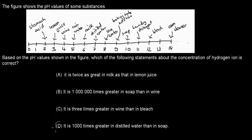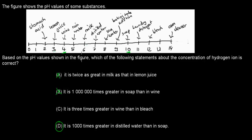Welcome back. The correct answer is D. B is incorrect — it says hydrogen concentration is a million times greater in soap than in wine. Remember, the lower the pH, the greater the hydrogen concentration. Wine has a lower pH than soap, so wine actually has the higher concentration. A is incorrect — lemon juice is at pH 3 and milk is at pH 6, and each step on the scale is 10 times, so it's 10, 100, 1,000 — lemon juice is 1,000 times stronger than milk. C is also wrong — wine versus bleach is much greater than 3 times.